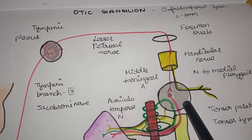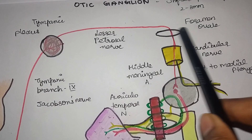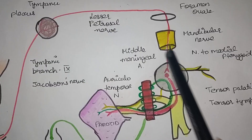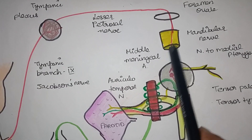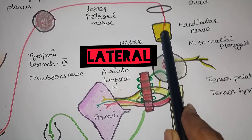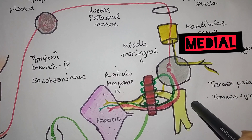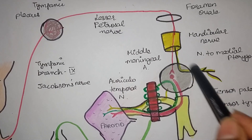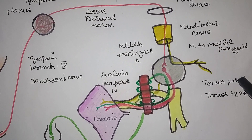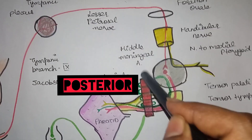The otic ganglion is present in the infratemporal fossa, below the foramen ovale. Looking at the immediate relations: it sits in the pocket of the mandibular nerve. The lateral relation is the mandibular nerve, and the medial structure is the tensor palati muscle — the nerve to tensor palati muscle, which is the medial relation to the otic ganglion.